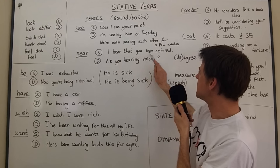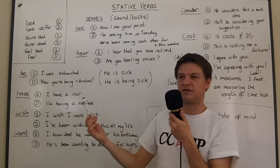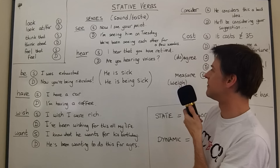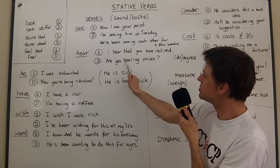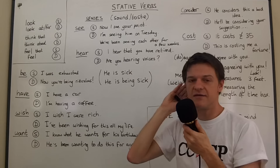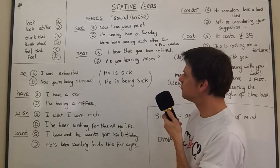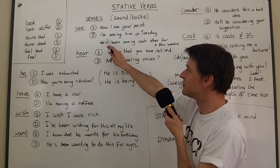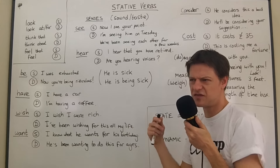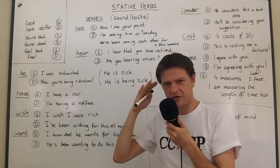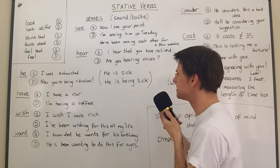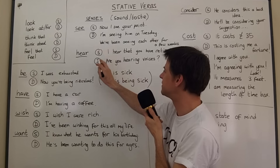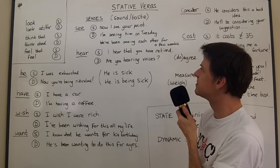'I hear that you have retired' — here, even though it was an action, we're using this verb in a stative sense. But you can change the meaning and say 'are you hearing voices?' — then it's used dynamically, implying some kind of mental problem. The same with 'see': 'are you seeing things?' would mean 'do you have some kind of hallucination?' So you can use both 'see' and 'hear' dynamically, but it changes the meaning.